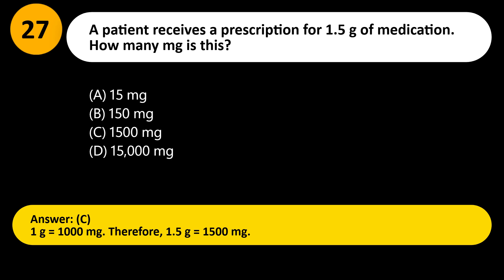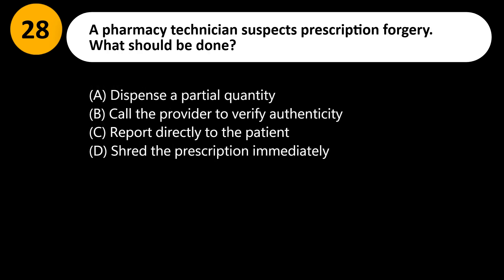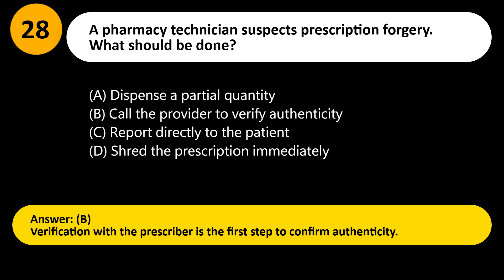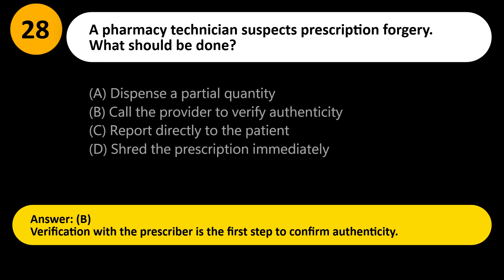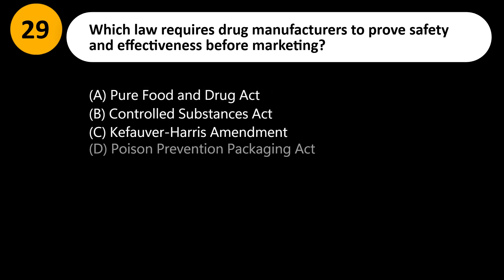A pharmacy technician suspects prescription forgery. What should be done? A) Dispense a partial quantity, B) Call the provider to verify authenticity, C) Report directly to the patient, D) Shred the prescription immediately. Answer: B. Verification with the prescriber is the first step to confirm authenticity.